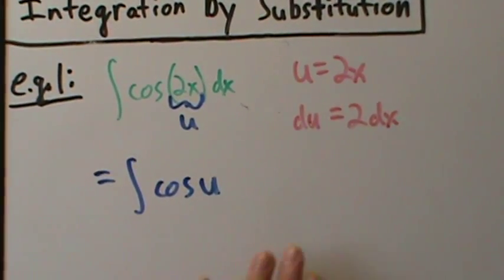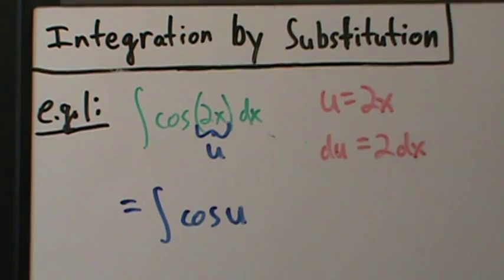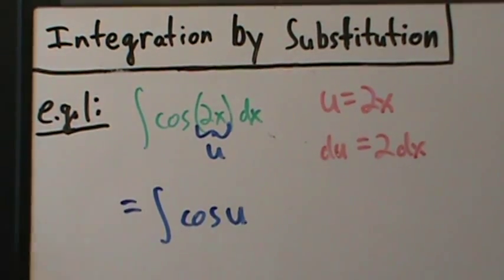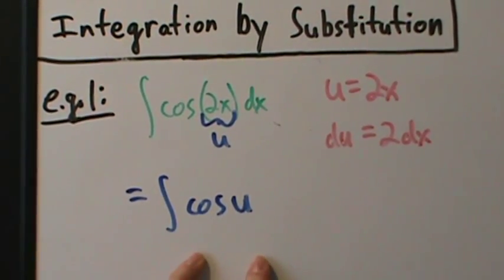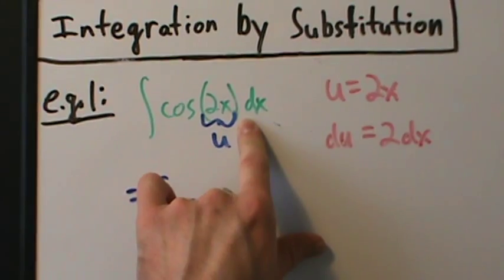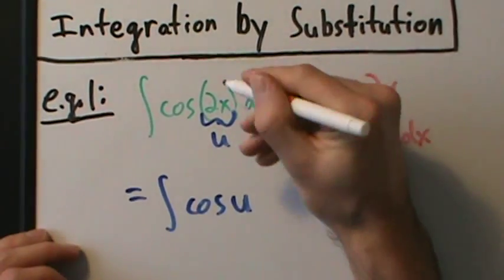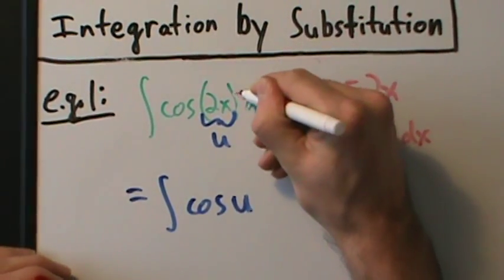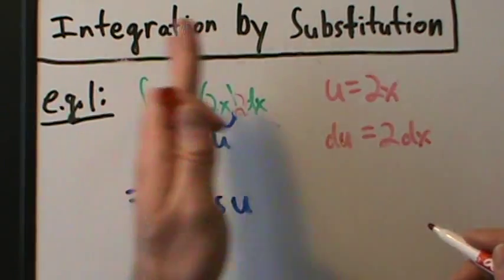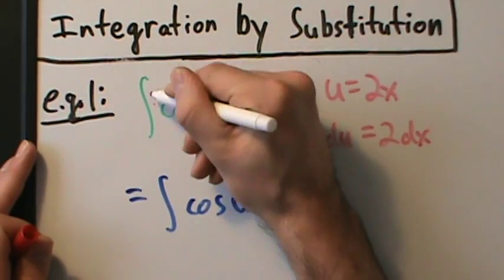We're still not quite there because we don't have 2 dx — we only have dx. There are two different ways to think about this. One way: stick a 2 in there to get 2 dx, but that means I've multiplied everything by 2, so I have to divide by 2 — or multiply by a half — to make that okay. So I put a 1/2 in front and now 2 dx is du.